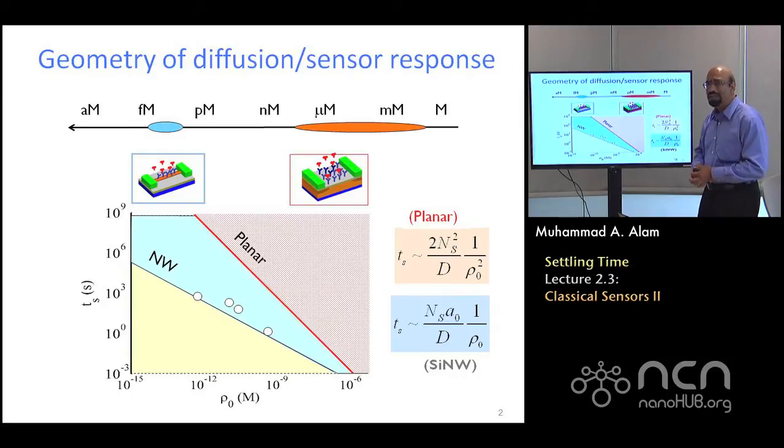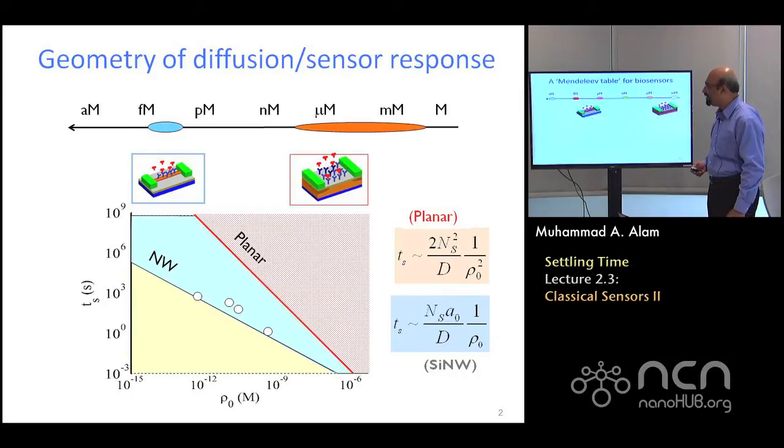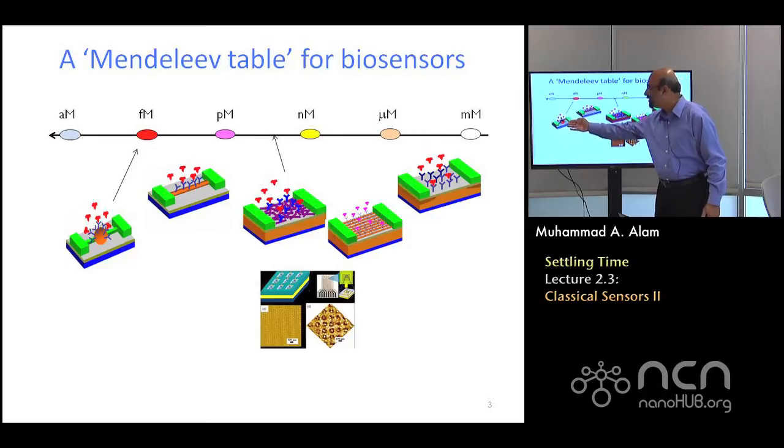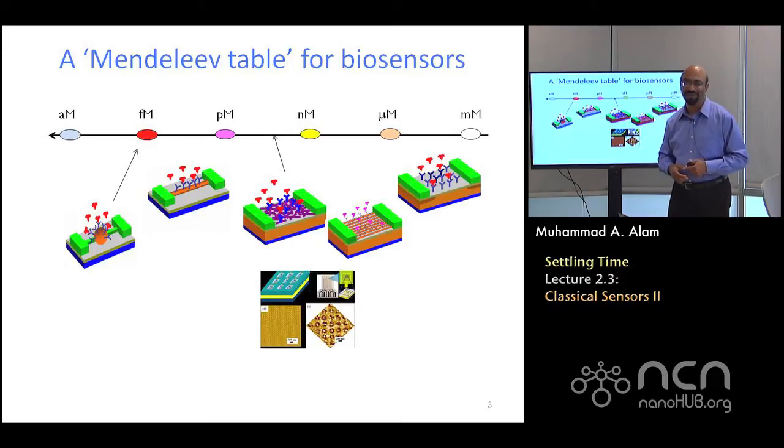But we want to do a little bit more using this. For example, we want to explain that if going from the planar to the nanowire gave us this six orders of magnitude improvement, should we just go ahead and make a nanosphere sensor? And if we did that, will it give us another four or five orders of magnitude enhancement in sensitivity? So that is what we want to do.